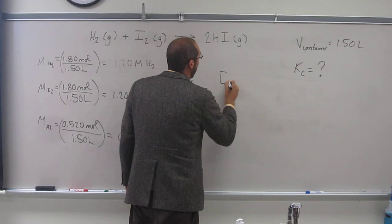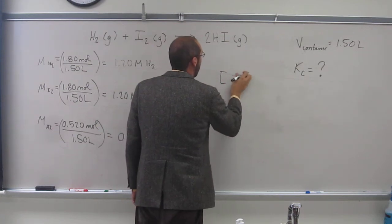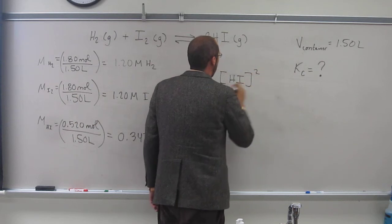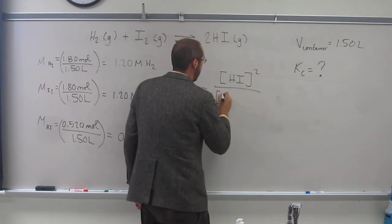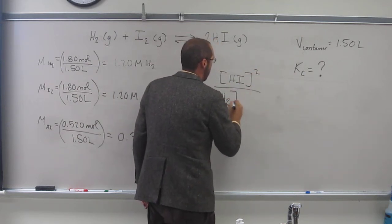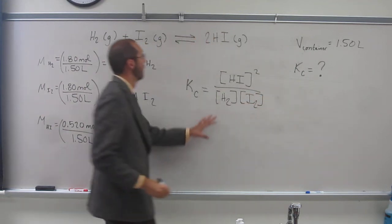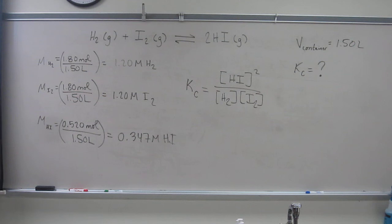HI squared, concentration of HI squared over the concentration of H2 times concentration of I2. Like that, right? Everybody okay with that?